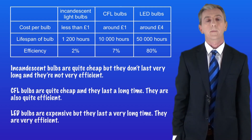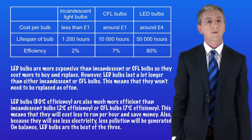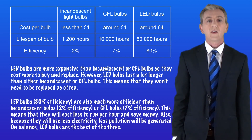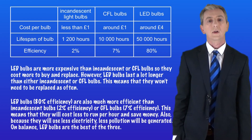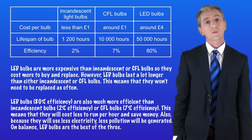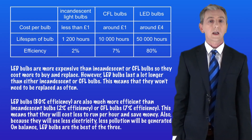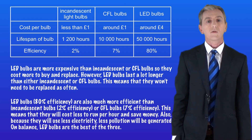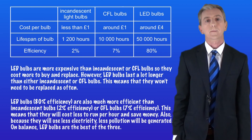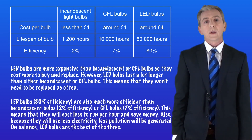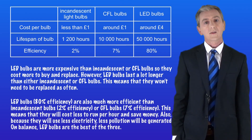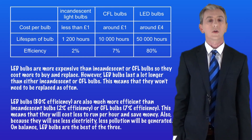Here's an example of a better answer. LED bulbs are more expensive than incandescent or CFL bulbs, so they cost more to buy and replace. However, LED bulbs last a lot longer than either incandescent or CFL bulbs, meaning they won't need to be replaced as often. LED bulbs at 80% efficiency are also much more efficient than incandescent bulbs at 2% efficiency or CFL bulbs at 7% efficiency. This means they'll cost less to run per hour and save money. Also, because they use less electricity, less pollution will be generated. On balance, LED bulbs are the best of the three. This is a good answer because the bulbs have been properly compared using data, some science has been used, and the answer has a final conclusion.